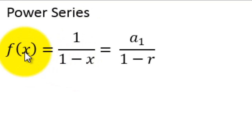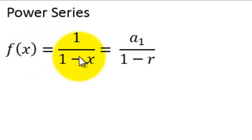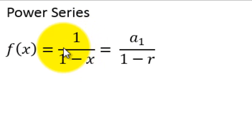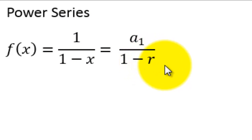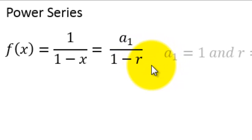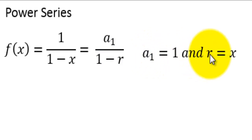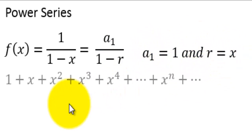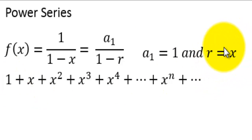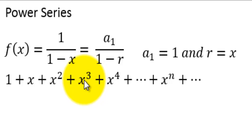Power series. f of x equals 1 over 1 minus x is called the function for the power series. This comes from the equation to find the sum of an infinite geometric series. On top we have a sub 1, and down here this is really the r when you talk about a geometric series. So a equals 1, r equals x. To find the series we start with 1 and multiply by x every time — that's what makes this a geometric series. So multiplying by x we get x, then x squared, then x to the 3rd, and so on.